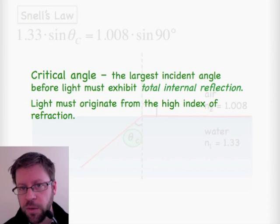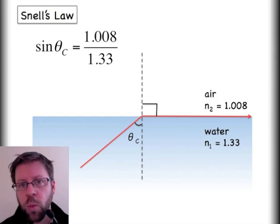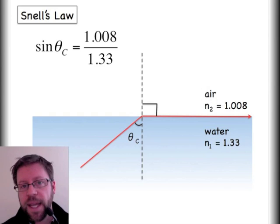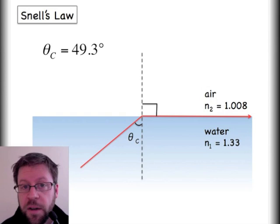So there's only one critical angle for any combination of materials. Water to air, there's only one. So in fact, let's go back and find out what is it for water to air. I'll do a little bit of algebra just to simplify this down. Again, I'm going to use the inverse sine function to find out that the critical angle for water going into air is 49.3 degrees. Different materials are going to have different critical angles.